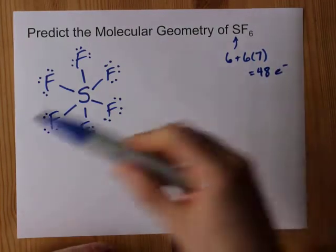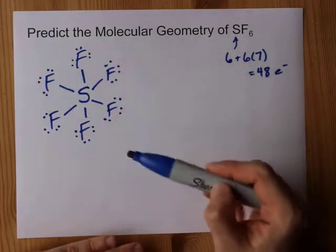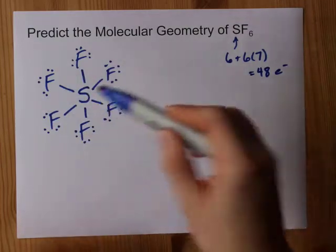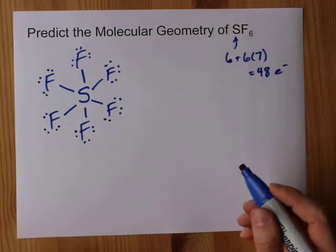If I have extras once I've completed all the octets on the outer atoms, I dump them on the center atom. This is it. This is my Lewis structure for SF6.